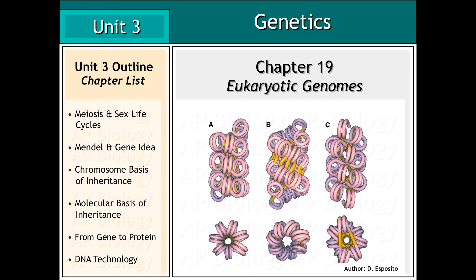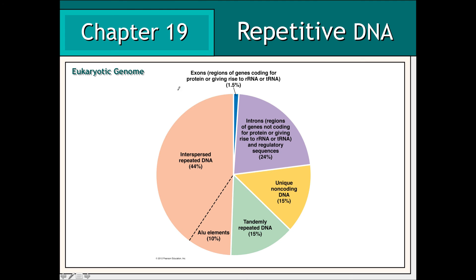In chapter 19, we'll be taking a look at the organization and regulation of eukaryotic genomes. Only a very small percentage of the eukaryotic genome contains sequences that code for either protein or various forms of RNA instrumental in gene expression. The remainder of the eukaryotic genome is comprised mainly of non-coding, repetitive sequences.